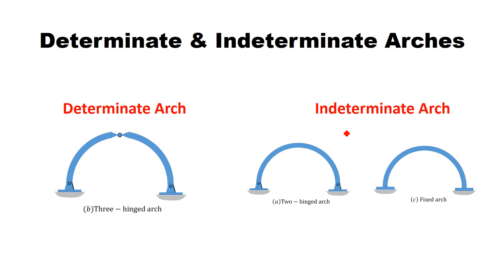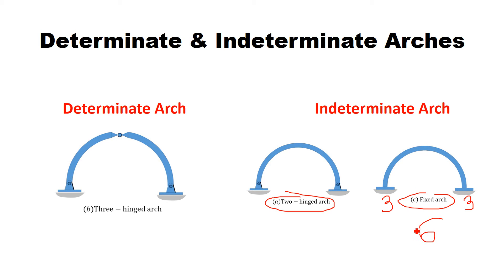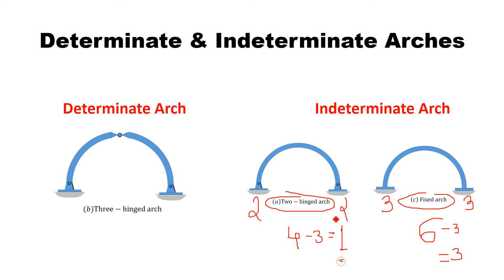But if you look at the other two figures — two-hinge arch and fixed arch — a fixed arch has three reactions at the left support and three at the right support, totaling six reactions. Equations of equilibrium are only three since there is no internal hinge, so it is indeterminate by three unknowns. Similarly, a two-hinge arch has two reactions at each support totaling four reactions, minus three equations of equilibrium and no internal hinge — so it is indeterminate by one. Two-hinge arch and fixed arch are indeterminate structures, while three-hinge arch is a determinate structure.